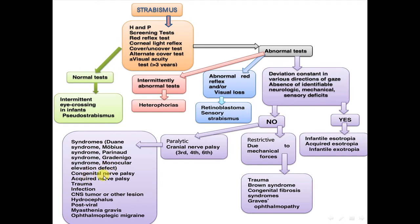Congenital or acquired nerve palsy causes include trauma, infection, CNS tumor or other lesion, hydrocephalus, post-viral illness, myasthenia gravis, or ophthalmoplegic migraine.